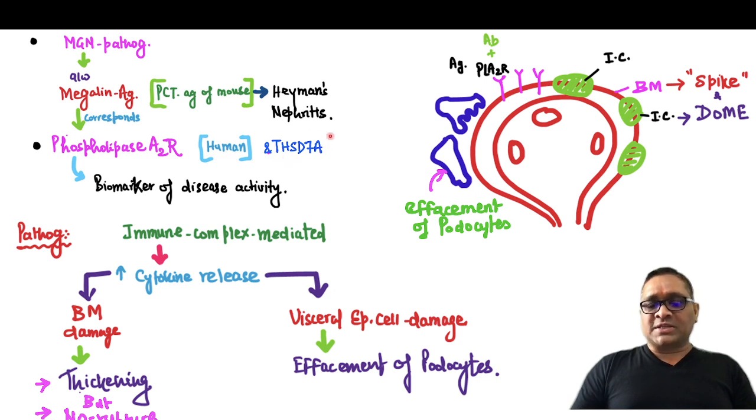And there is a new thing which has been added in Robbins: THSD7A. These two things, phospholipase A2 receptor and THSD7A, they are biomarkers of Membranous disease activity also.